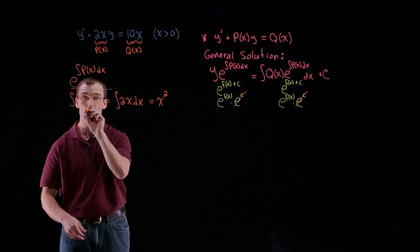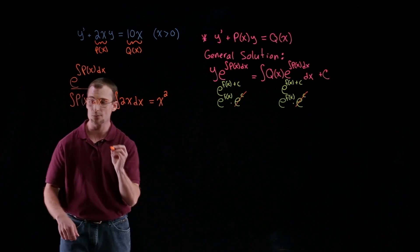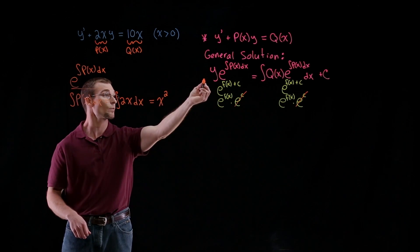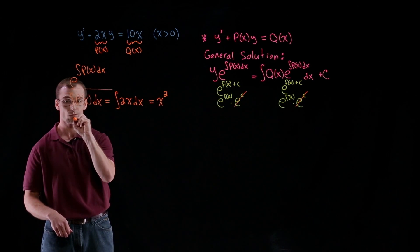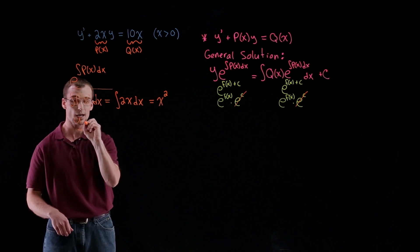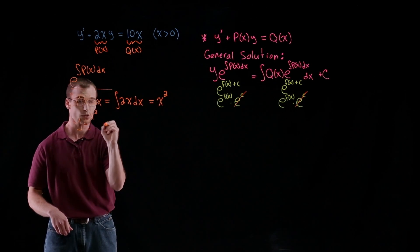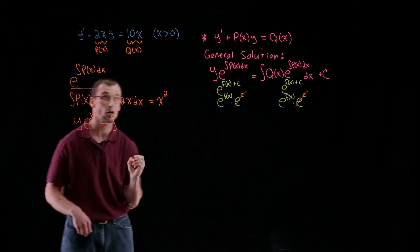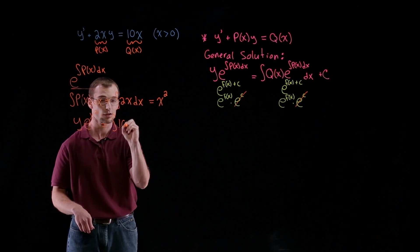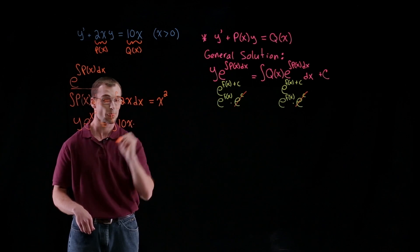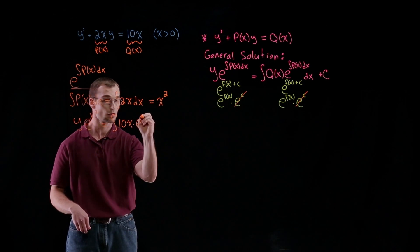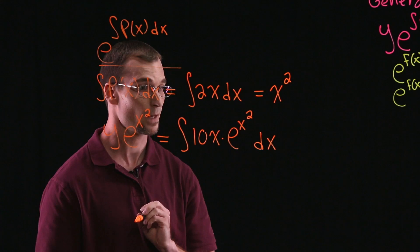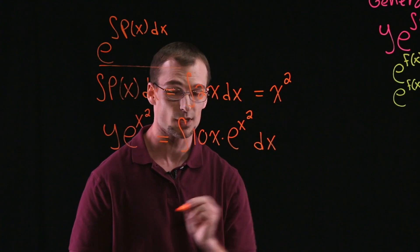So we have our integral again of P(x) dx is x squared. So that's going to give us the left-hand side of our general solution. We'll have y times e to the x squared is equal to the right-hand side, the integral of Q(x), which is 10x, times, again, e to the x squared dx.